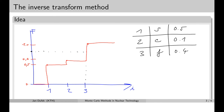Let's simulate several numbers. The next one could fall here — the corresponding reaction type would be 1, scattering. The next one could fall here, giving reaction 3, fission again. Another could fall here, again reaction 1, scattering. Then another here — scattering again. Another random number could be 0.55, so it falls here, and the corresponding reaction type 2 denotes capture.